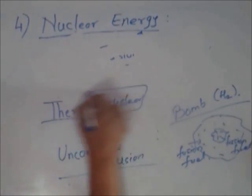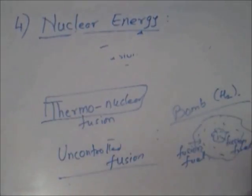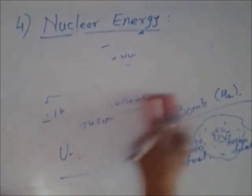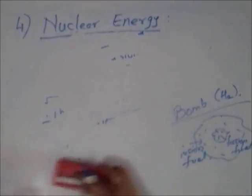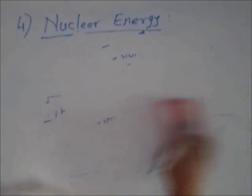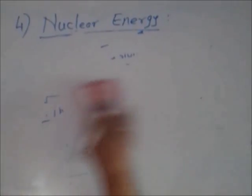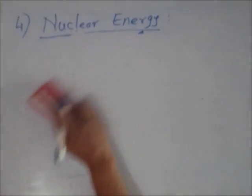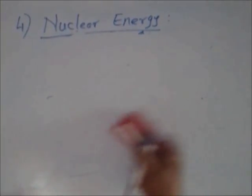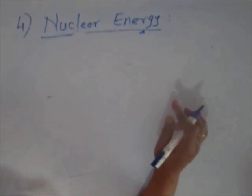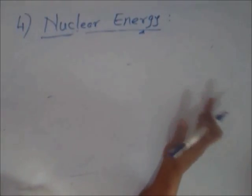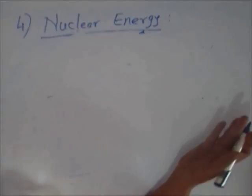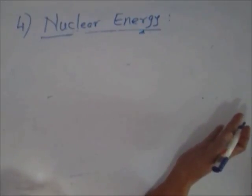This thermonuclear fusion reaction causes fusion and liberates a large amount of energy. It is uncontrolled — in the sun it is uncontrolled, and in the hydrogen bomb it is uncontrolled. Since it all happens in a very very small amount of time, the energy release is enormous.